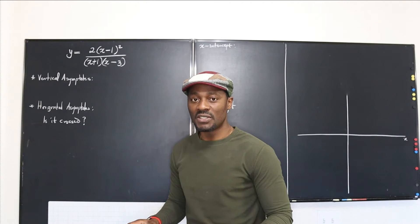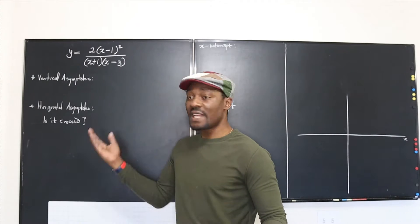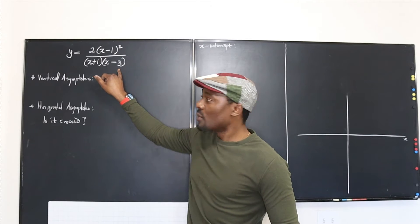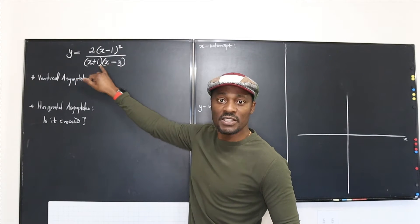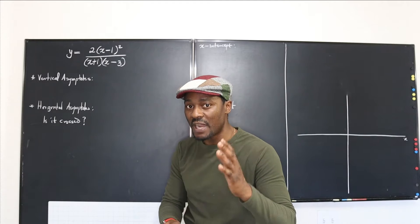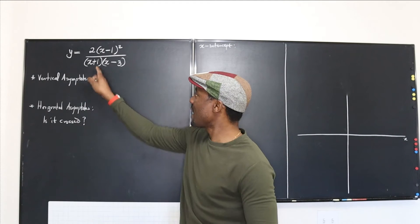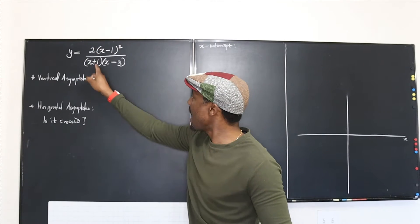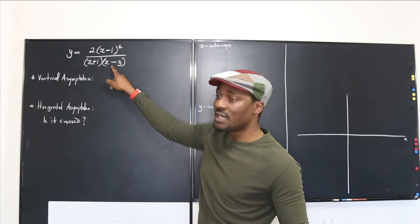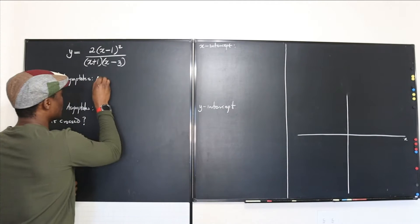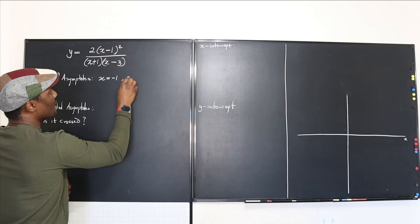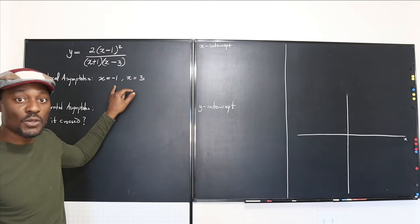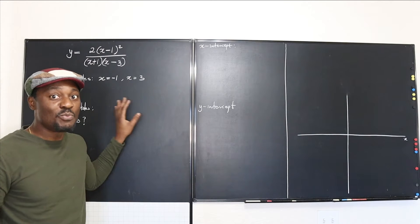The good thing about rational functions is that you expect all values of x to fit into the function, except when the denominator equals zero. Whatever values of x give you a zero in the denominator will be the vertical asymptotes — those are values of x you cannot have on your graph. So x cannot be negative one and x cannot be three, because those make the function undefined.